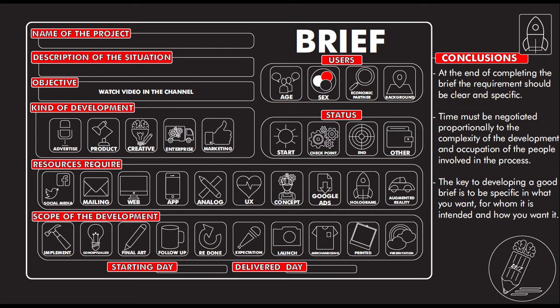As a conclusion, at the end of completing the brief, the requirements should be clear and specific to all the people involved in the project. Time must be negotiated proportionally to the complexity of the development and the occupation of the people involved in the process — it's very important to fulfill delivery expectations. The key to developing a good brief is to be specific in what you want, for whom it is intended, and how you want it.